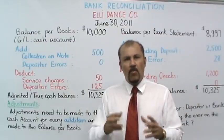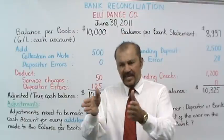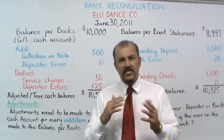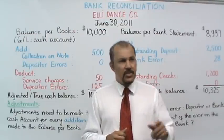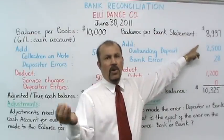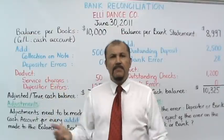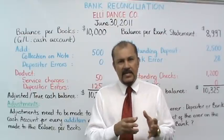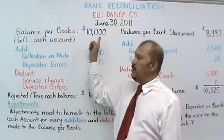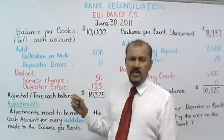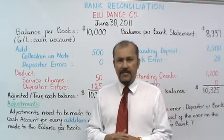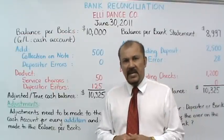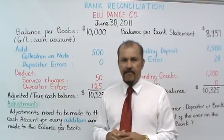When the bank received the check, it processed the check and deposited this $500 in Ellie's bank account immediately. So Ellie's bank balance increased by $500 in the month of June. The bank statement balance of $8,997 already includes this $500. However, since Ellie never got the check directly at her offices, at the end of the month her book balance of $10,000 does not include this $500. So we add the $500 to Ellie's book balance to bring it in line with her bank statement balance, which already includes this $500.